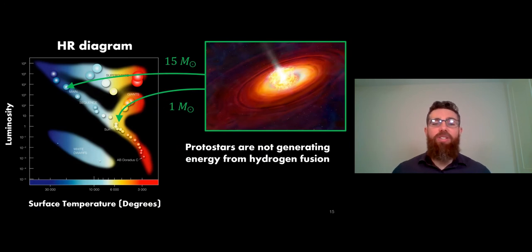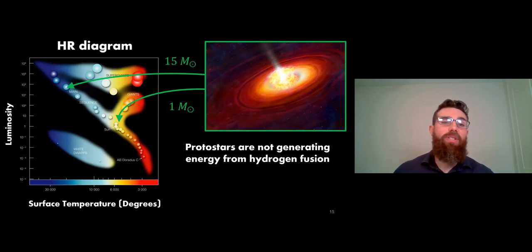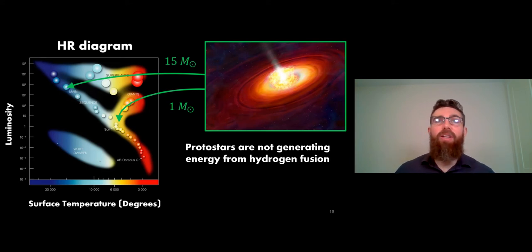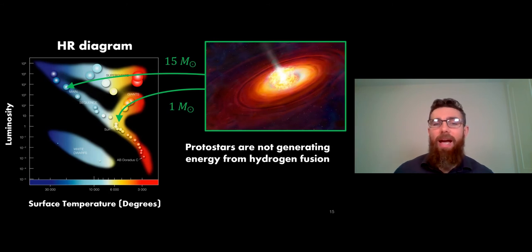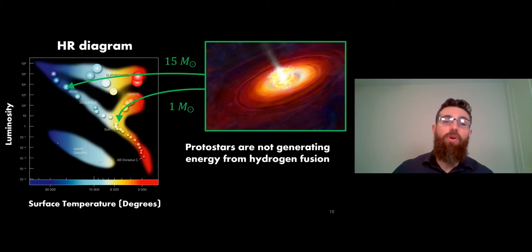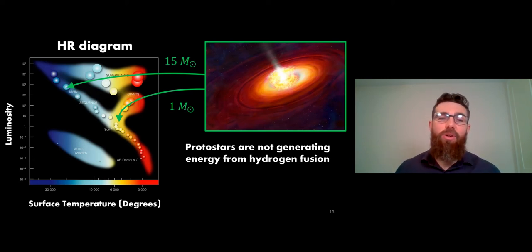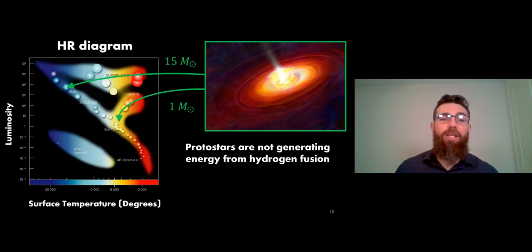Once we've got to this stage we have a protostar. These are not generating energy from hydrogen fusion in their core - most of their energy comes from that gravitational collapse initially. They're not quite hot enough to undergo hydrogen fusion and not fully collapsed, so they're not yet in full hydrostatic equilibrium. They're not on the HR diagram at the moment but they move leftward onto it from the right-hand side. Depending on the mass of the protostar it takes a slightly different route - smaller protostars take a more vertical route down to the main sequence, while larger ones take a more horizontal route.